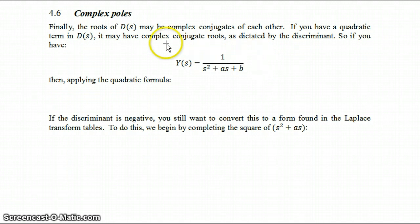So for example, if you have this for Y of S, then to see if you have complex conjugate roots, you apply the quadratic formula to find those roots. So those roots of D of S in this case would be S equals minus 1 half A plus or minus 1 half times the square root of A squared minus 4B.